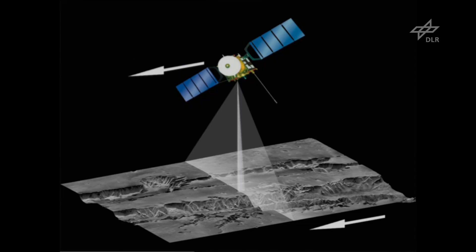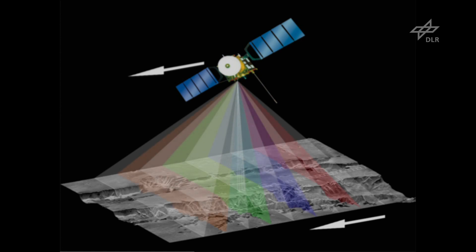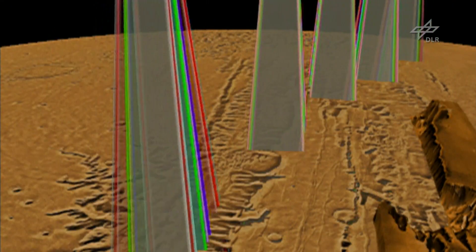For Mars Express, there was already quite good knowledge about the global shape of Mars, derived from laser altimeter measurements. But these are just derived along ground tracks. What was missing was area-based coverage by high-resolution images that could allow for stereo analysis.